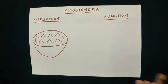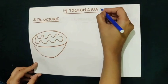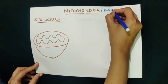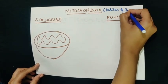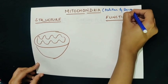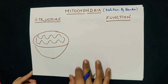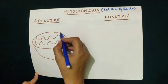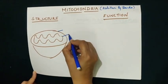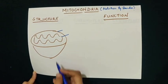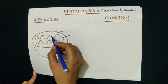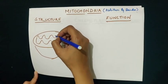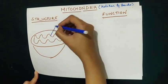Mitochondria is a cell organelle which was discovered by Kolliker and Benda. Now moving on to its structure, mitochondria is a double membrane bound structure. It has got one outer membrane and one inner membrane. The inner membrane of mitochondria is deeply folded to form curves or inner folds which are called cristae.